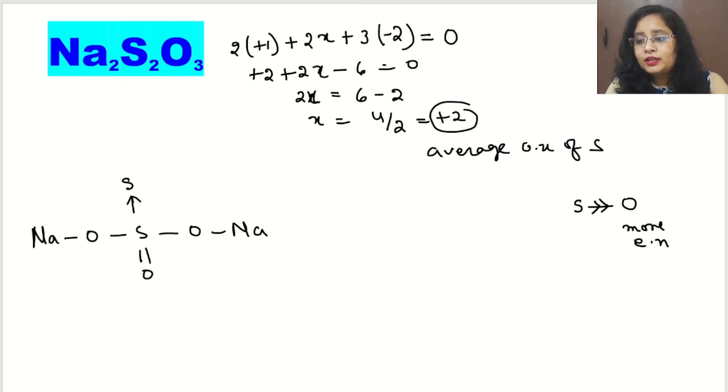What will happen? Oxygen will take the shared pair of electrons and acquire a minus charge. In turn, it will give sulfur a positive charge. That minus charge will be the oxidation state of oxygen, and the plus charge is the oxidation state of sulfur. This concept we will use for the covalent bonds between sulfur and oxygen.